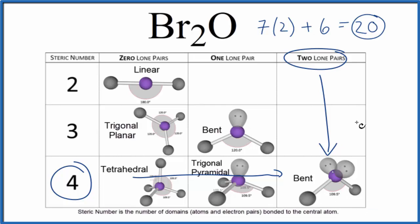If you use the AXE notation to figure this out, you would say AXE, where A is the central atom. That's the oxygen. We have 2 atoms around it, the 2 bromines. And we said we had 2 lone pairs. We have AX2E2, and that again, that would give us this bent molecular geometry.